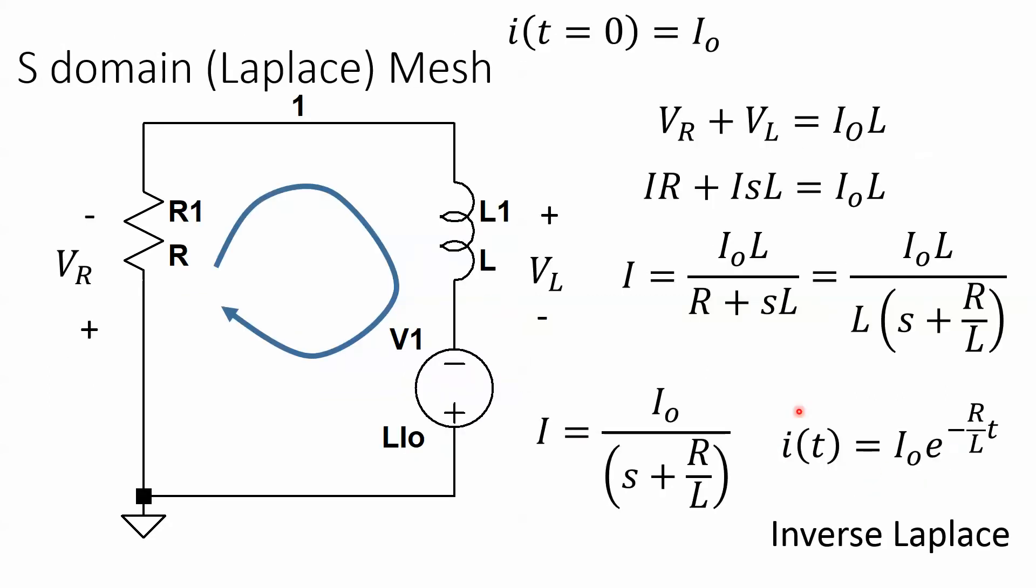Now we can do this in the Laplace domain. All right, and how do we get the initial condition? We take the inductor and we put a voltage source that's actually in the opposite direction, and that voltage source is equal to the initial current times the inductance.